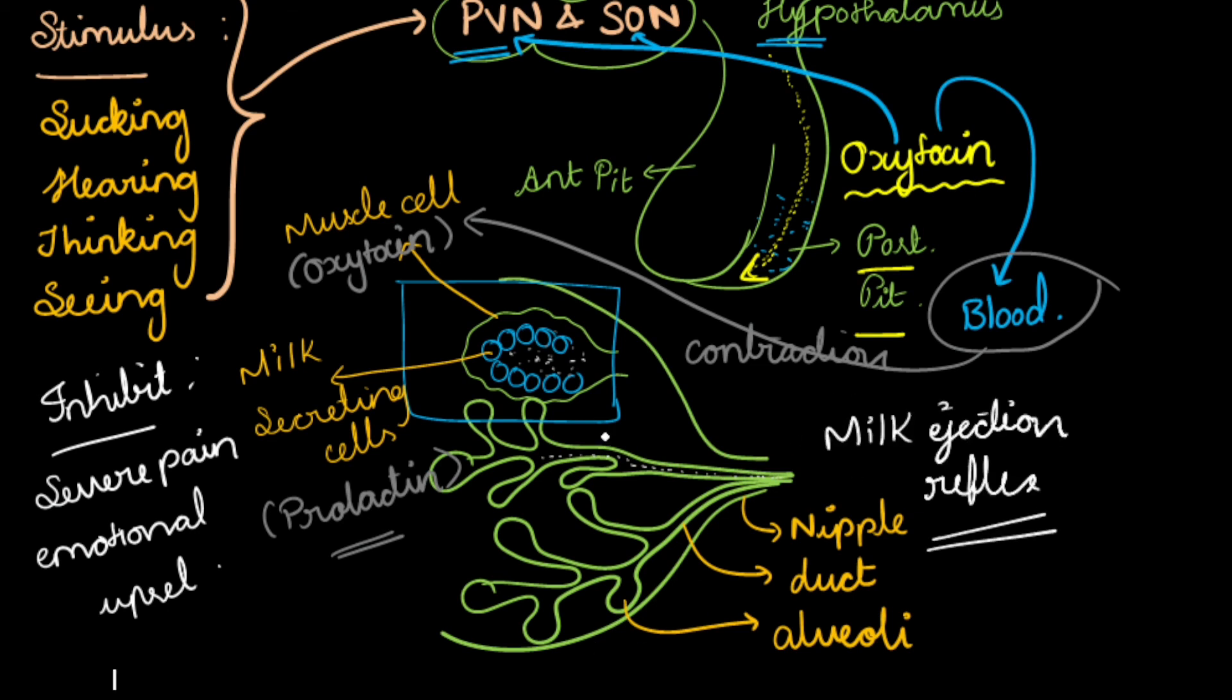This is all regarding how milk ejection is happening and who is mainly responsible, that is none other than the oxytocin which was released by hypothalamus and secreted into the blood through the posterior pituitary nerve endings. If you have any topics for suggestion, kindly mention in the comment below. Thank you so much and happy learning with us.